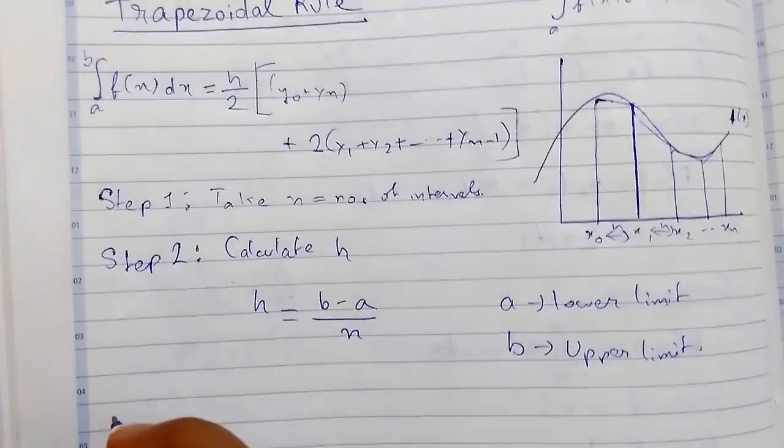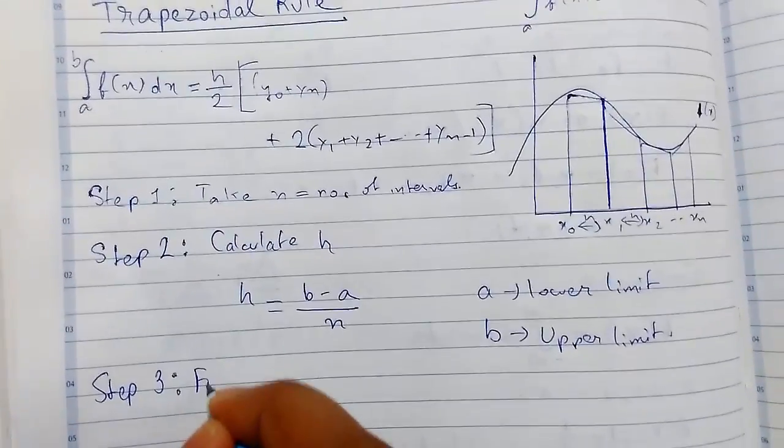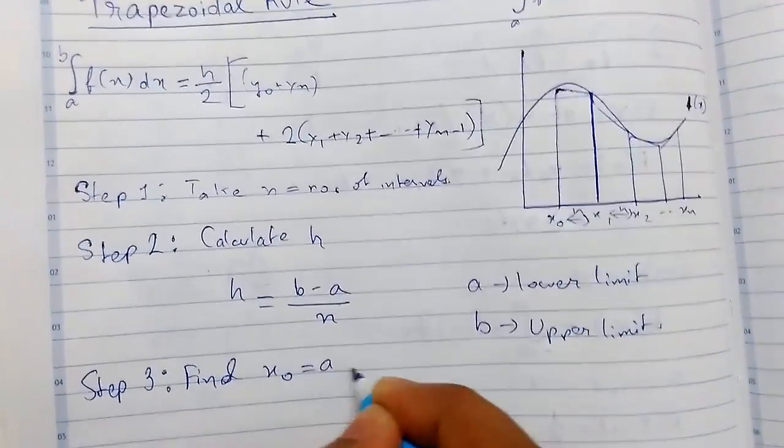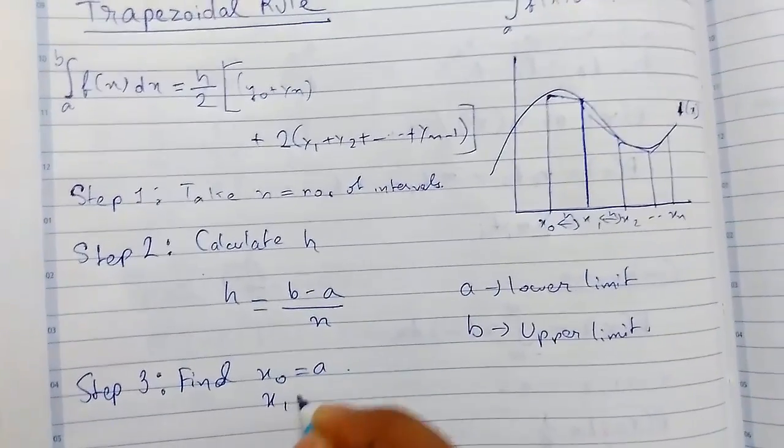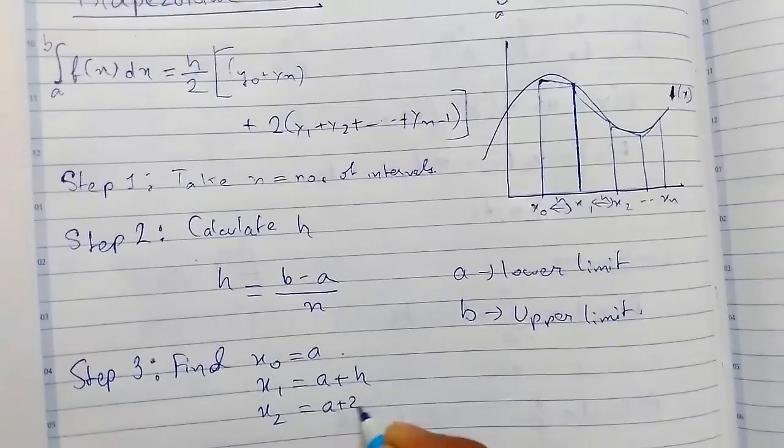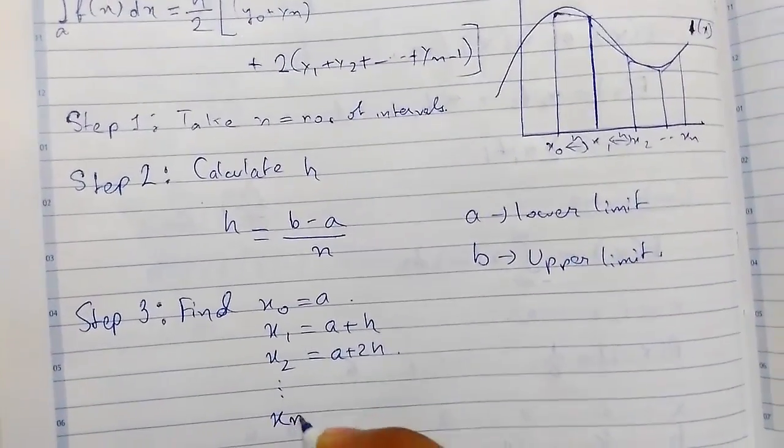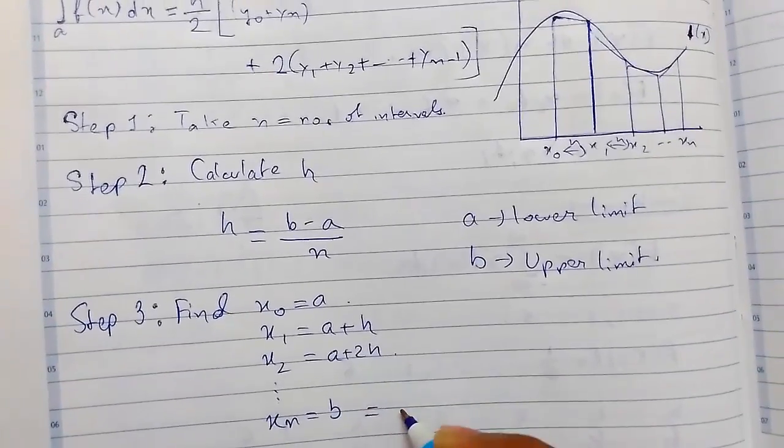Step 3 - Find x0 = a, x1 = a + h, x2 = a + 2h, and so on up to xn = b, which also equals a + nh.